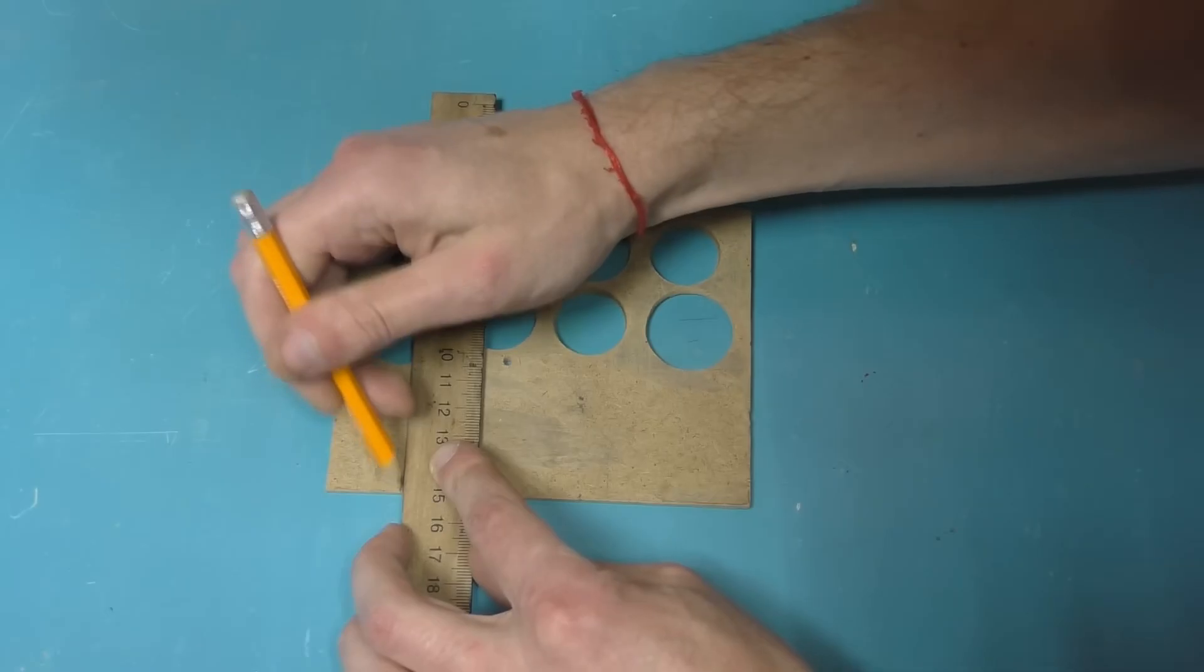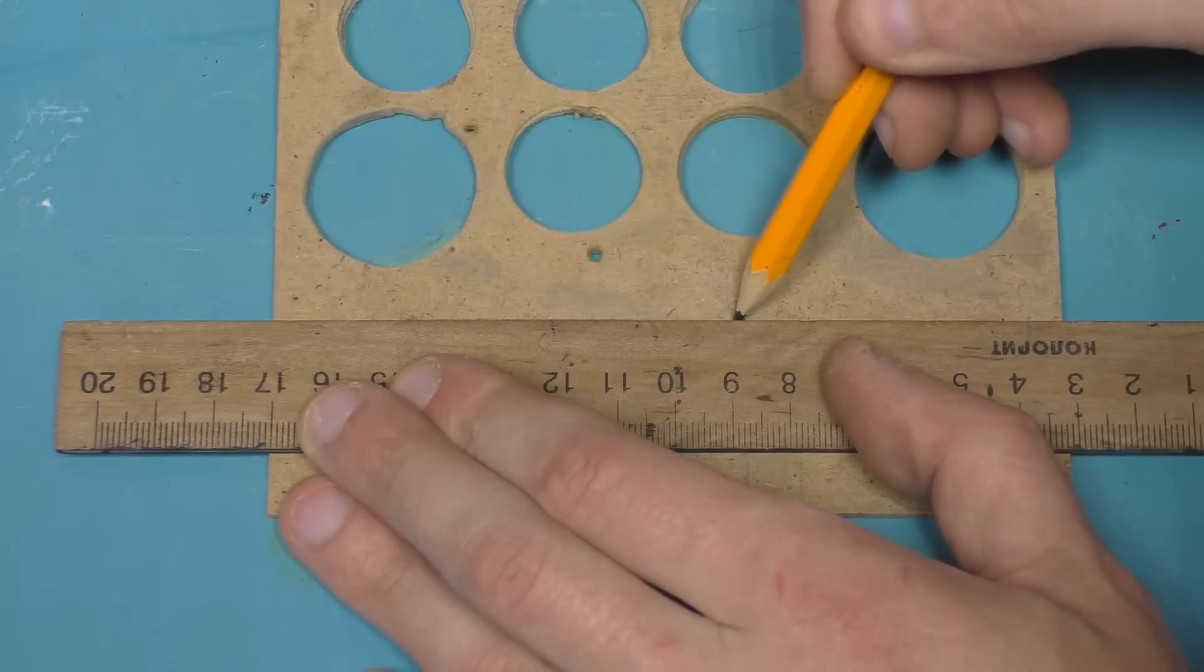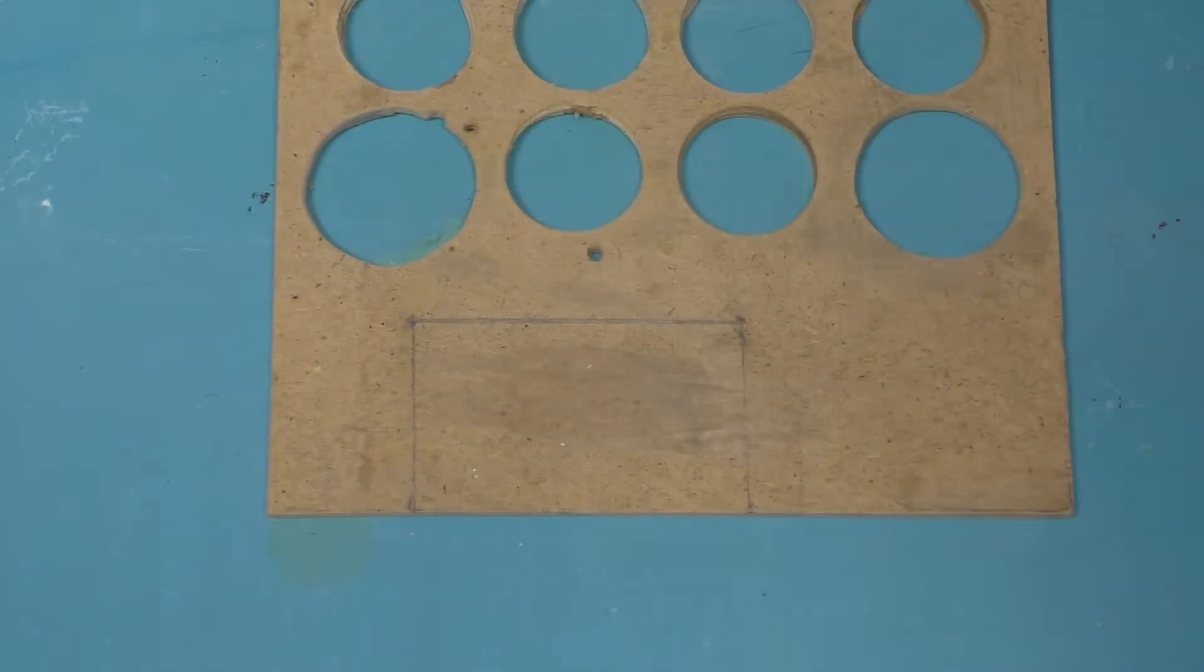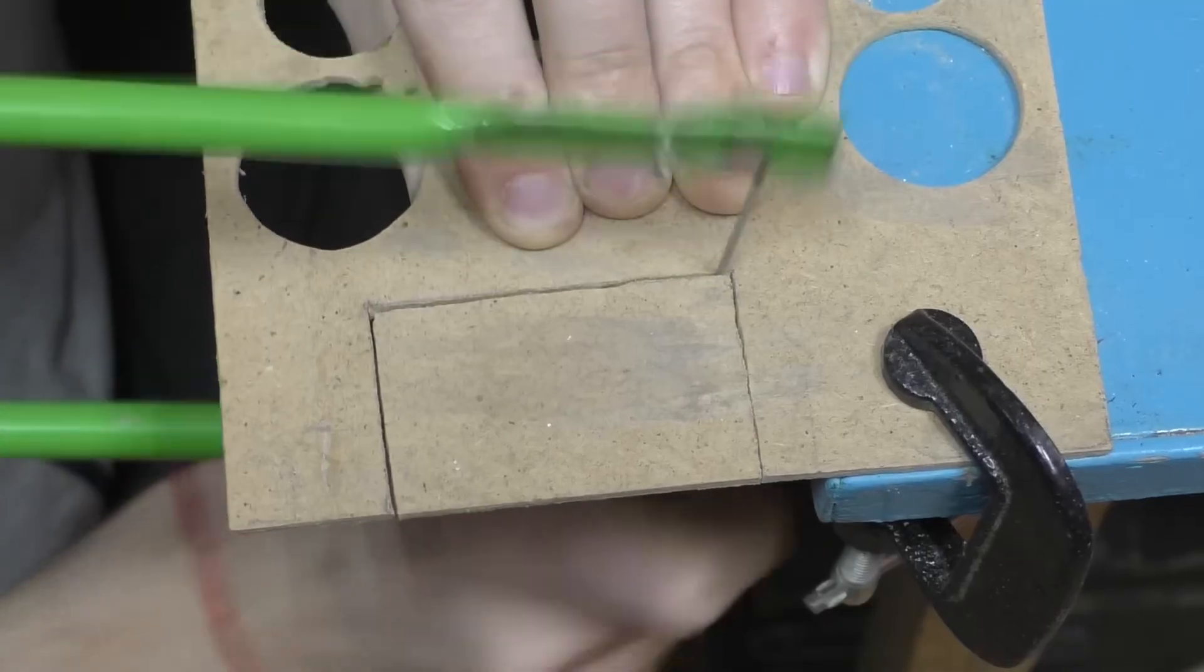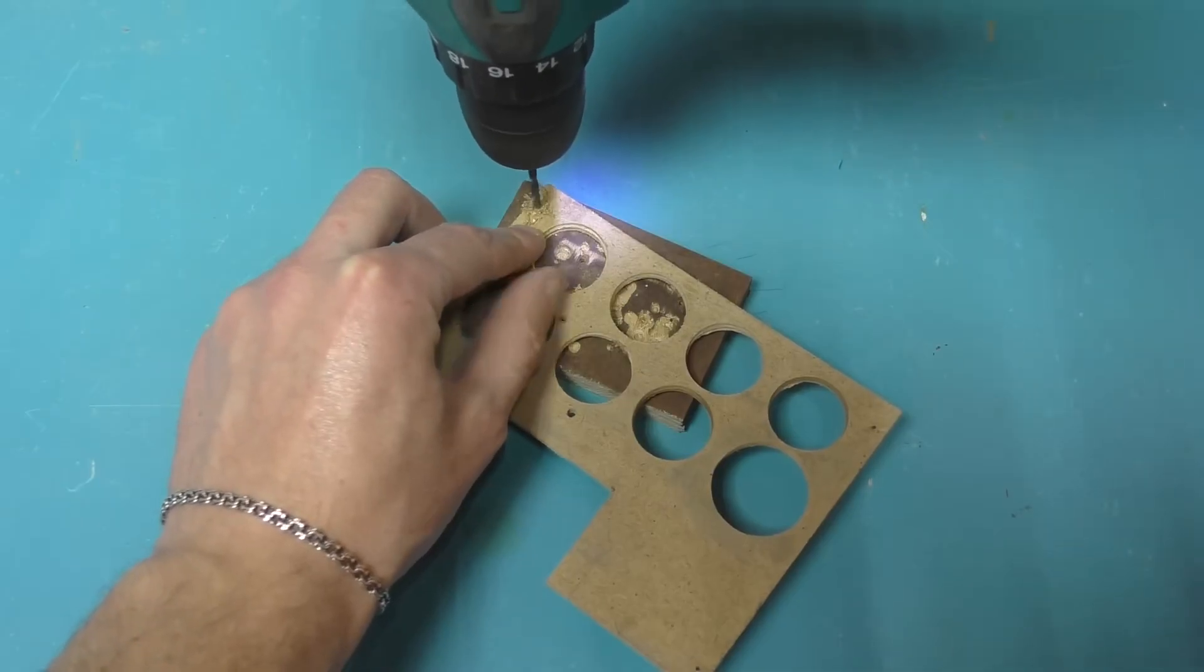Let's mark it out and then cut out another small piece. We need to make 4 more holes along the edges, and you'll see why later.